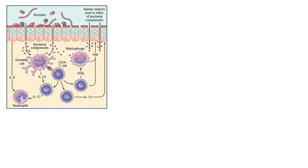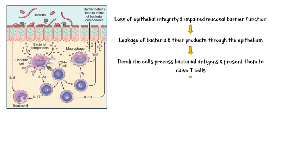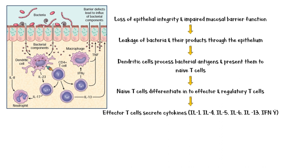This image shows a summary of the pathogenesis of inflammatory bowel disease. Due to the loss of epithelial integrity and impaired mucosal barrier function, bacteria and their products leak through the epithelium. The dendritic cells process these antigens and present them to naive T cells, which in turn differentiate into effector and regulatory T cells. Effector T cells secrete various cytokines, including interleukins and, most importantly, gamma interferon, which causes macrophage activation.